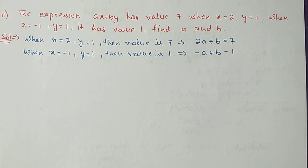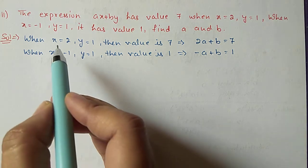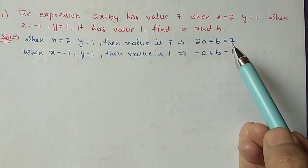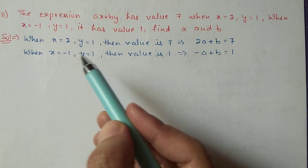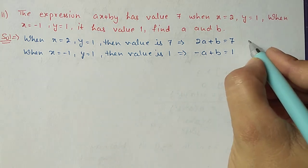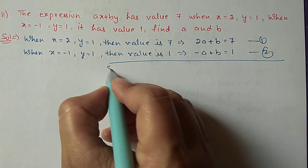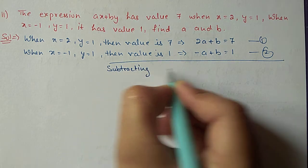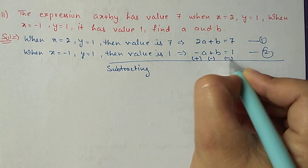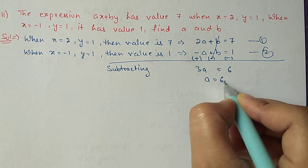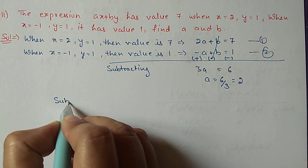Question number 11: the expression ax plus by has value 7 when x is 2 and y is 1; when x is minus 1 and y is 1 it has value 1. Find the values of A and B. Substituting x equal to 2 and y equal to 1, we get 2A plus B equal to 7 (equation 1). For the second: x is minus 1, y is 1, giving minus A plus B equal to 1 (equation 2). The B coefficient is the same with the same sign, so we subtract. Subtracting equation 2 from equation 1: 2A plus A equals 3A, B cancels, and 7 minus 1 equals 6. So A equals 6 divided by 3, which is 2.